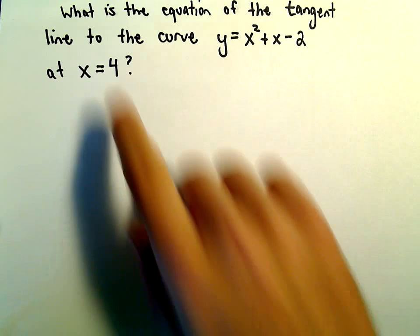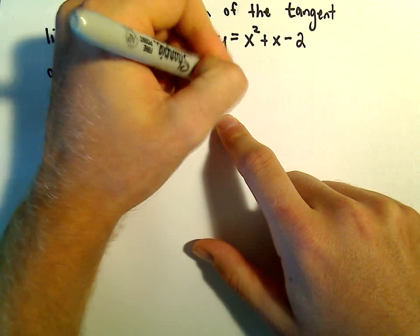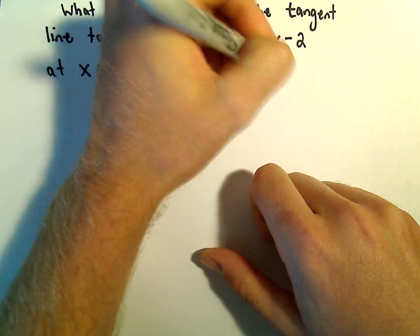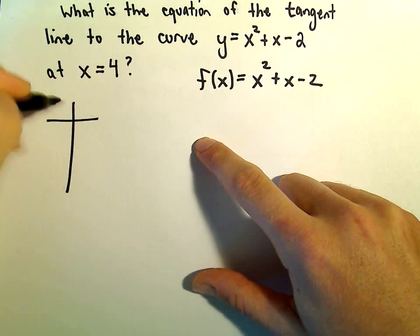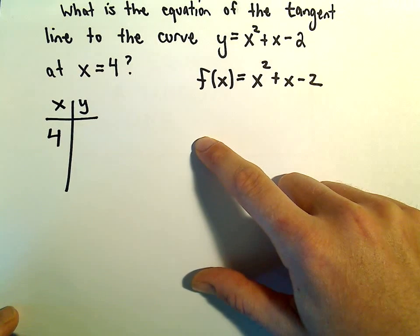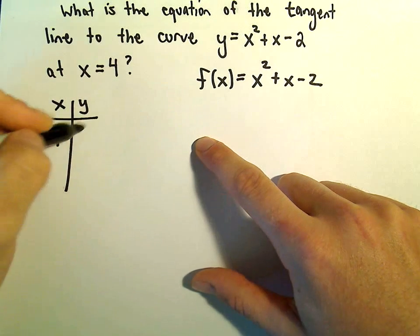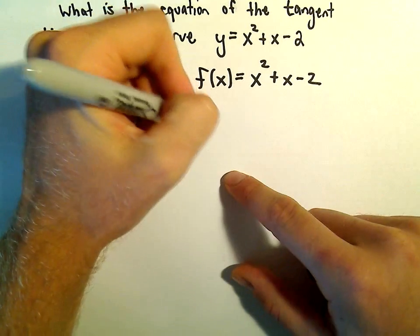The first thing I'm going to do is rewrite this. Instead of y I'm going to call it f of x. So x squared plus x minus 2. If you think about making a little xy chart, we know that the x-coordinate's 4, that's what's given to us. To figure out the corresponding y-value on the function, we just plug it in.